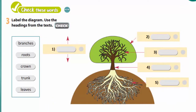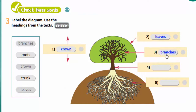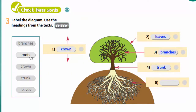In exercise 3, you are to label the diagram. Use the headings from the text. For example, number 1: crown. Number 2: leaves. Number 3: branches. Number 4: trunk. Number 5: roots.